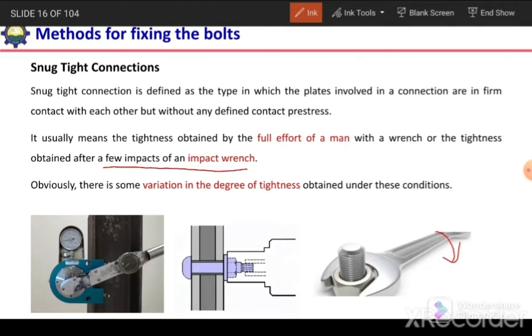In case of snug tight connection, there will be variation in the degree of tightness. The tightness of all the bolts will not be the same. It will depend on different factors like the number of impacts.